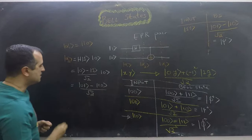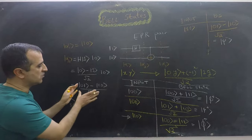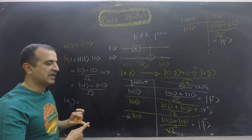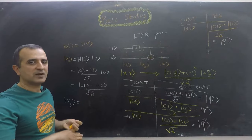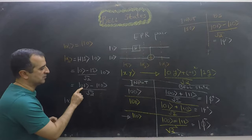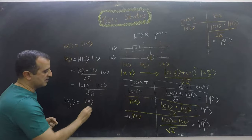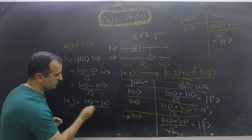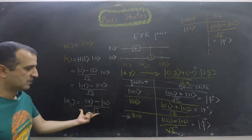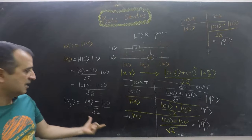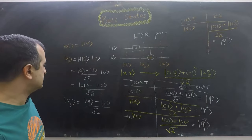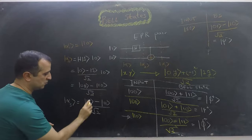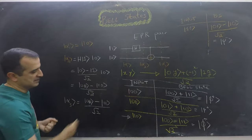Then |α3⟩ is obtained by applying the CNOT gate on both qubits. CNOT flips the second qubit if the first is 1, and leaves it unchanged if the first is 0. Applying CNOT: |00⟩ stays |00⟩, and |10⟩ flips to |11⟩. So the final output is (|00⟩ − |11⟩) / √2, which matches our expected Bell state — noting a correction that what was written as |01⟩ should be |00⟩.